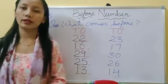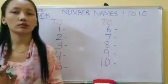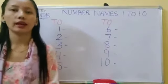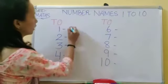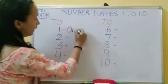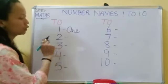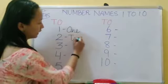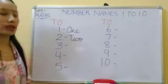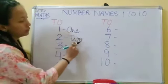I hope you understand the concept of before number. Now next is number names 1 to 10. Students, you will use cursive pattern. Number 1 — O N E, ONE. Number 2 — T W O, TWO.